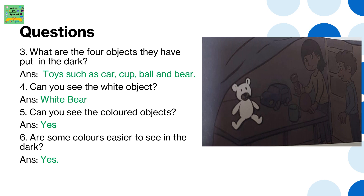What are the four objects they have put in the dark? Toys such as a car, cup, ball, and bear. Can you see the white object? It's the white bear. Can you see the colored objects? Yes. Are some colors easier to see in the dark? Yes.